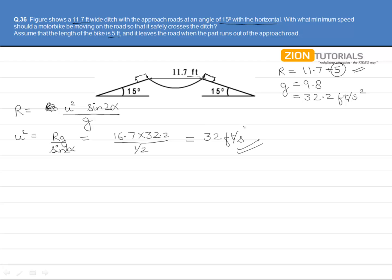Thus, this is the minimum speed with which the motorbike should be moving in order to cross this ditch. Since we know that range is proportional to u square, any u more than this will be able to move the bike from this side to this side.